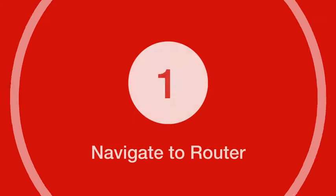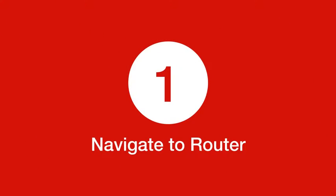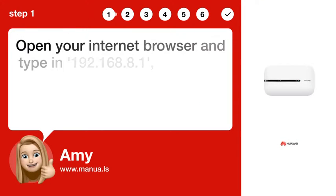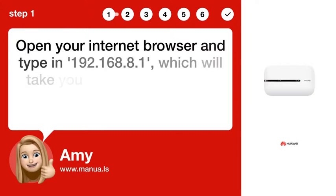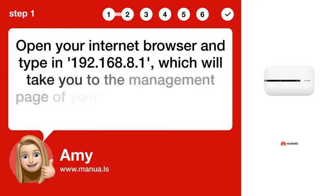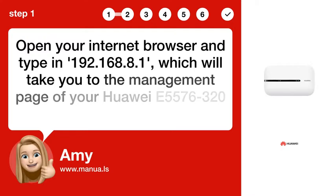Step 1: Navigate to Router. Open your internet browser and type in 192.168.8.1, which will take you to the management page of your Huawei E5576-320 router.